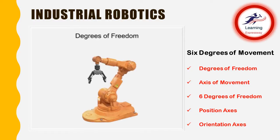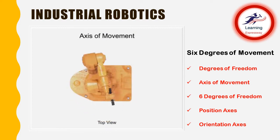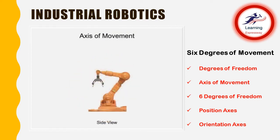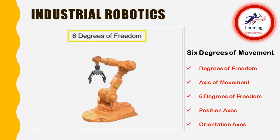Robots come in all different shapes and sizes, but are frequently classed by their degrees of freedom. Each direction of movement on the robot is considered an axis of movement. This robot rotates at the waist, bends forward and back at the shoulder, and moves vertically at the elbow. Each single movement axis is equal to one degree of freedom. This particular robot is equal to six degrees of freedom.